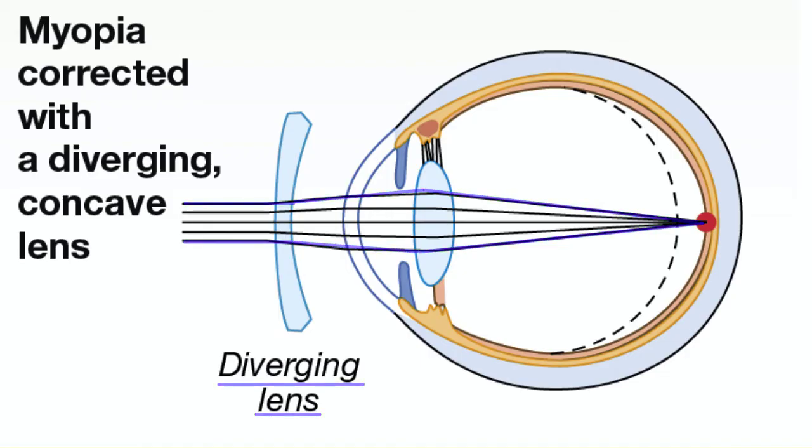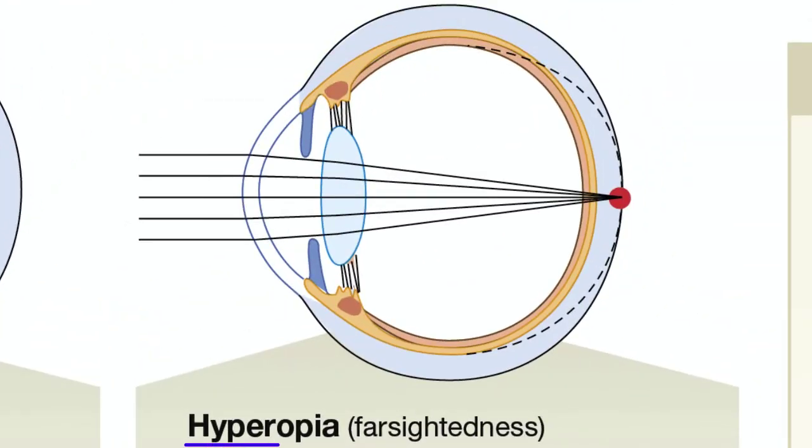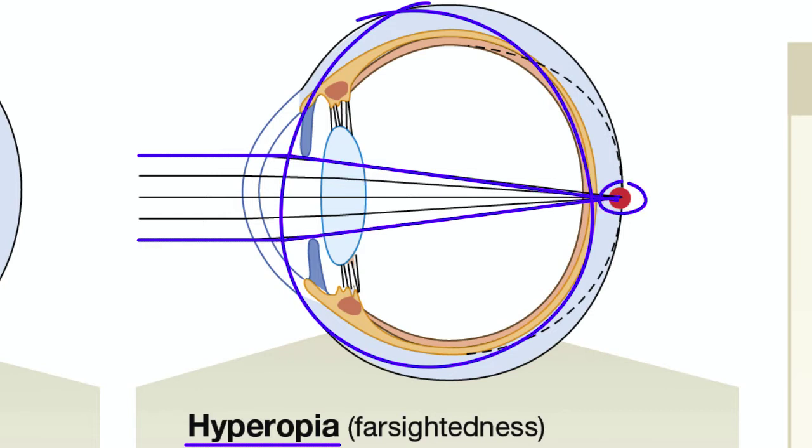People with farsightedness, or hyperopia, can see distant objects clearly but have difficulty seeing things nearby. Hyperopia results from an eye that is too shallow. Light focuses on a point behind the eye.